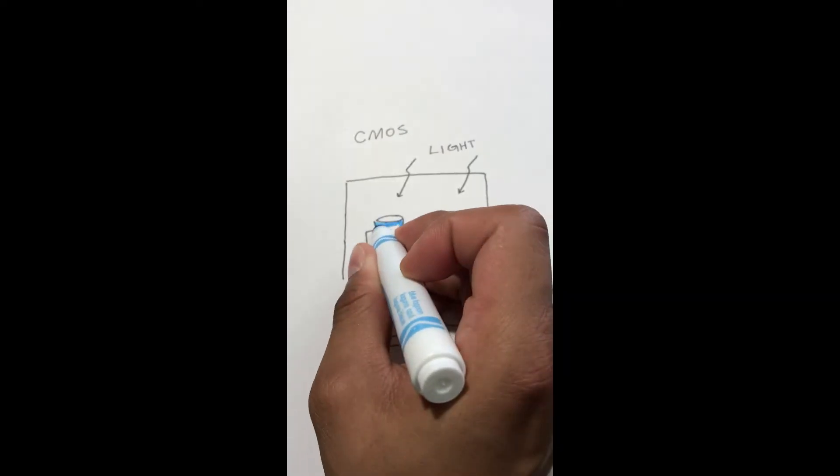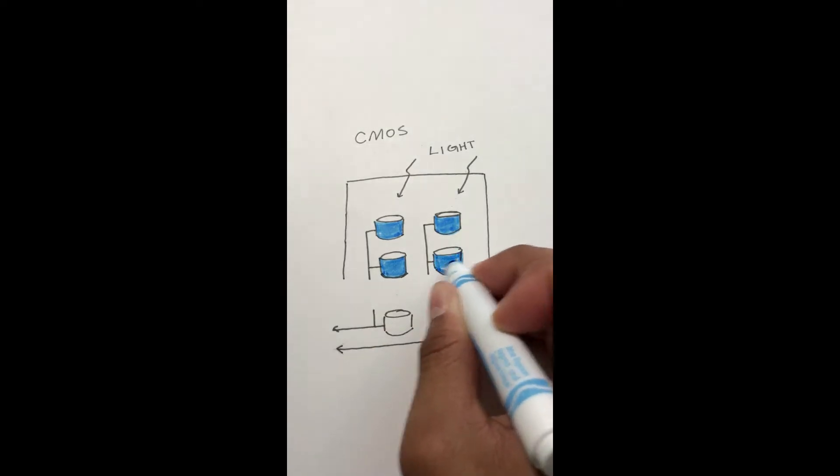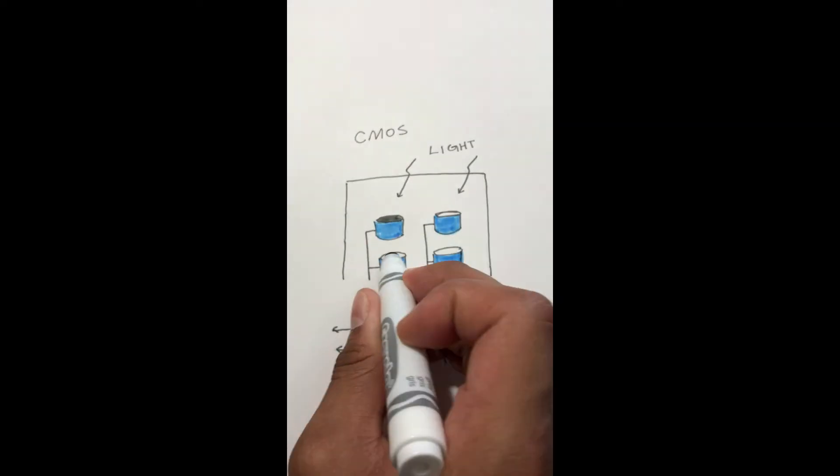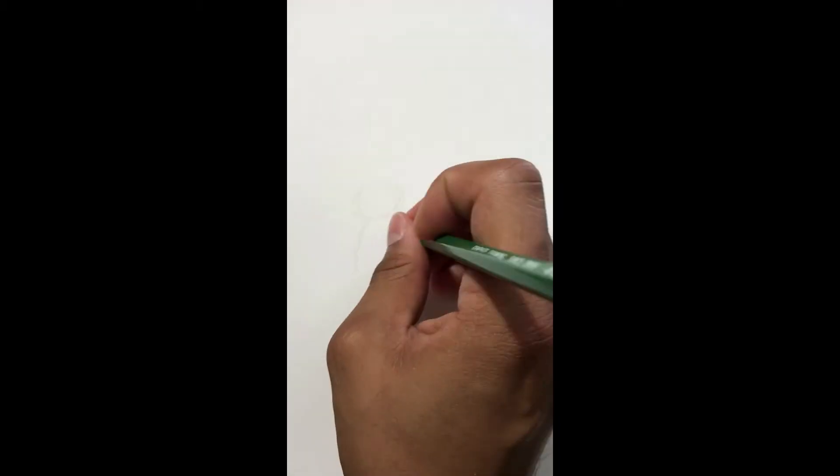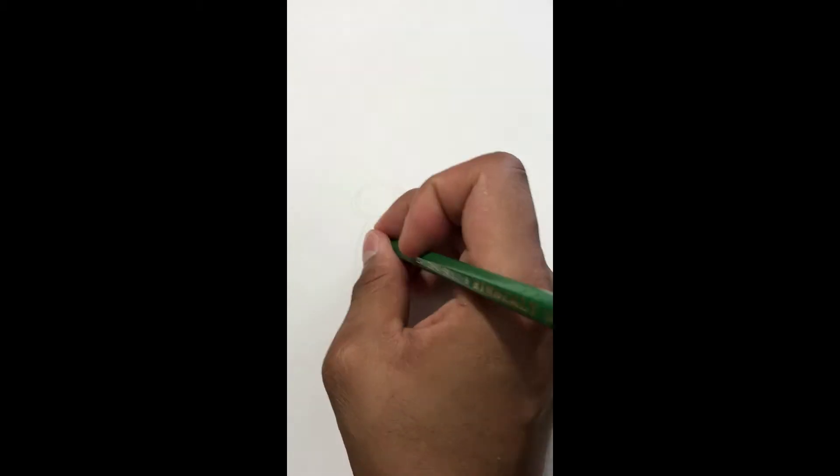Complementary metal oxide semiconductor or CMOS sensors read the light at each pixel simultaneously rather than sequentially as in CCD sensors. The information captured at each pixel consists of the color and brightness of the optical signal.